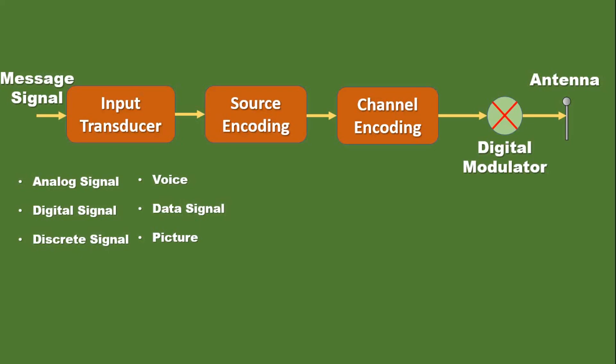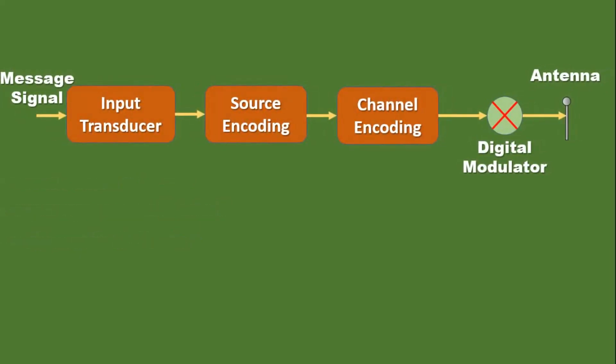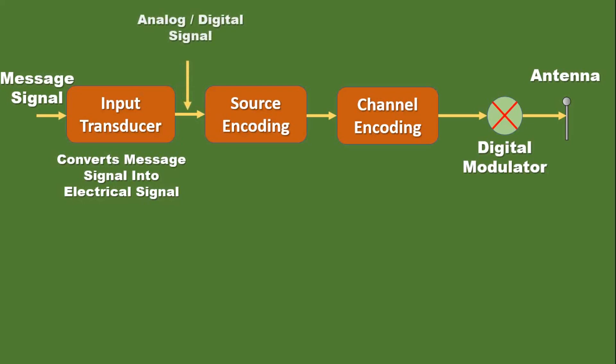To transmit them, the output of the first block may be analog or digital in nature, and it will always be an electrical signal. The input transducer is a device which converts those physical signals into electrical signals, because in the case of transmission, we need to transmit an electrical signal. The output of the input transducer may be analog or digital in nature, and it will always be an electrical signal.